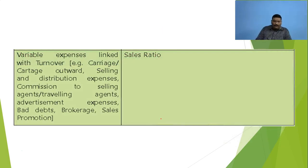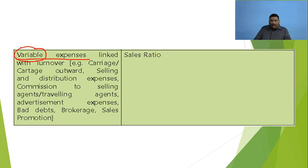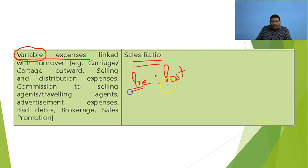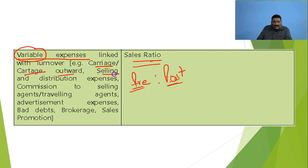Moving to the second point: there are few expenses which are considered to be variable expenses. Variable means their size or amount will vary with the amount of sales. All variable expenses are distributed in the ratio of pre and post period — the sales of pre period and sales of post period will be the base for distributing these expenses. Examples of these expenses are carriage output, selling and distribution expenses, commission to selling agents, travelling agents, advertisements, bad debts, brokerage, and sales promotion. All these expenses are related to sales.